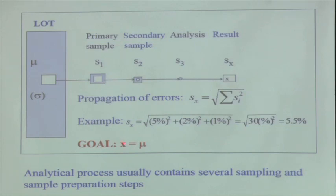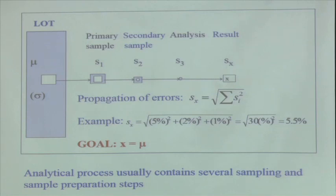My goal is x = μ, the true value. If someone says I want to bring the error down to 1.5%, I have to go back and find where that 5% error came from, then put more money, manpower, and sophisticated technique to minimize it. But if someone is okay with 5.5%, then you have to keep track of the confidence interval — that depends on repeated samples and repeat analysis.